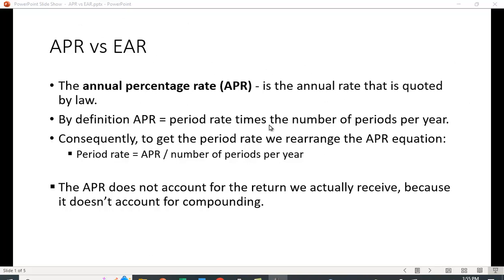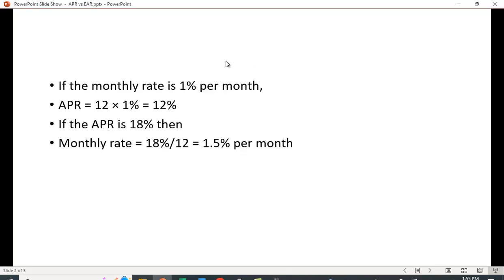Let's take a look at how we would compute this. It's quite simple. If the monthly rate is 1% per month, then the APR is 12%. If the APR is 18% and it's compounded monthly, we divide by 12, and that would be one and a half percent per month.